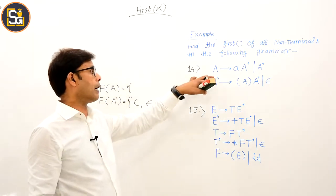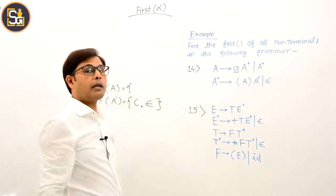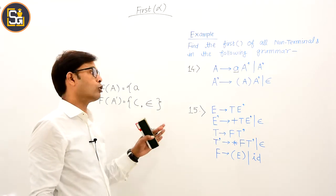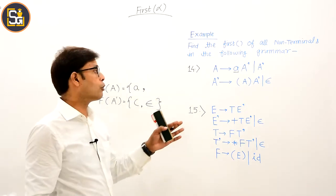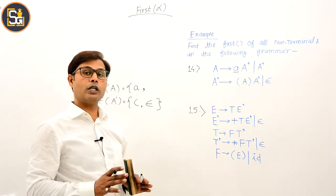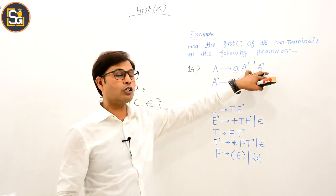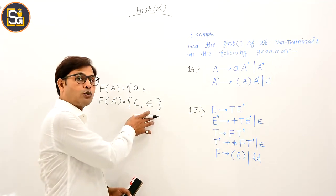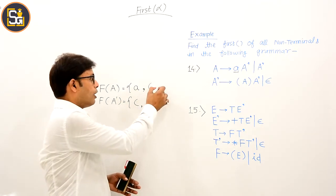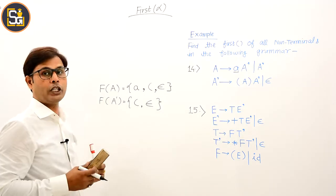Now come to the FIRST of capital A. A derives A A-dash — yeh pick karte hain, aur yahaan par beginning mein hi terminal mil jaata hai. Iska matlab koi bhi string isse derive hone wali ho, uska beginning ka letter terminal 'a' to hoga hi, to 'a' iske FIRST mein hona hi hai. Next production: A derives A-dash, iska matlab hai FIRST of A equal to FIRST of A-dash. FIRST of A-dash mein opening parenthesis aur null hain, to FIRST of A mein bhi opening parenthesis aur null aayenge. So FIRST of A and A-dash is computed.